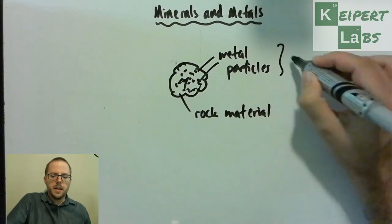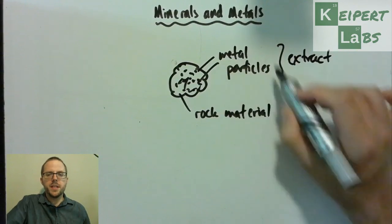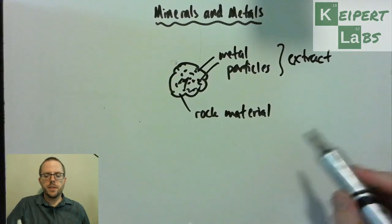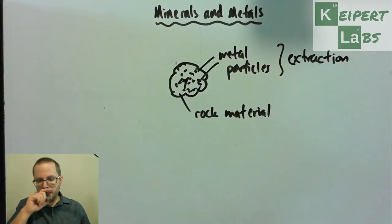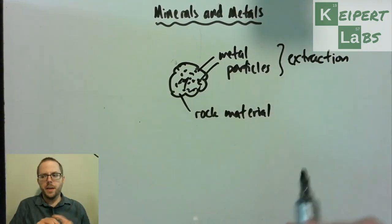And what we have to do is we want to be able to use these chunks of metal to separate them and purify them into metal that we can use for all sorts of other things. And so we need to do a process called extraction, of this idea of, right, well, we've got to somehow get the metal out of there so that we can use it.